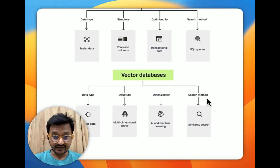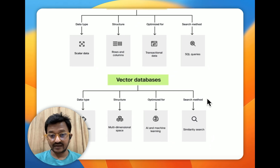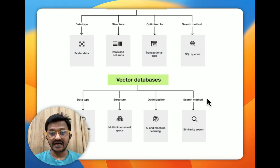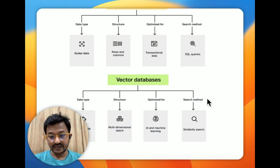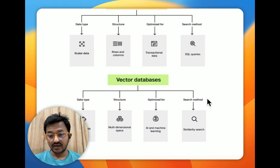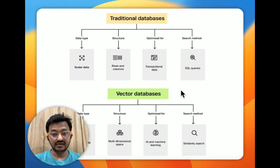Whereas in vector databases, the data type is vector data. The data gets chunked and converted into embeddings — that's how vector embeddings are created. The data type stored is vector data, and the structure is a multidimensional space. It is optimized for AI/ML applications, and the search method is similarity search, vector search, or semantic search. These are the main differences between traditional and vector databases.